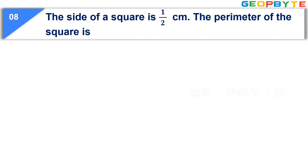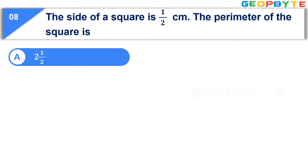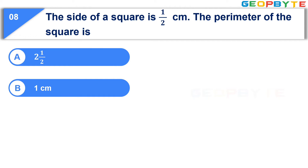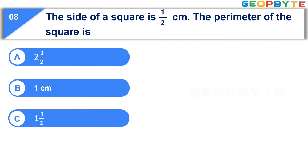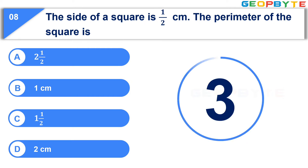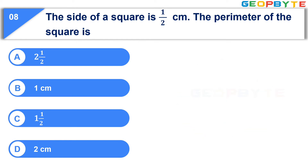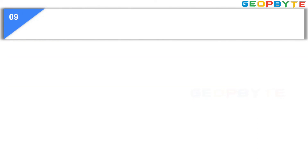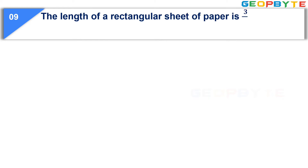Moving to the eighth question. The side of a square is 1 by 2 cm. The perimeter of the square is: option A, 2 and 1 by 2; option B, 1 cm; option C, 1 and 1 by 2; option D, 2 cm. Your time starts now. The correct answer is option D, 2 cm.